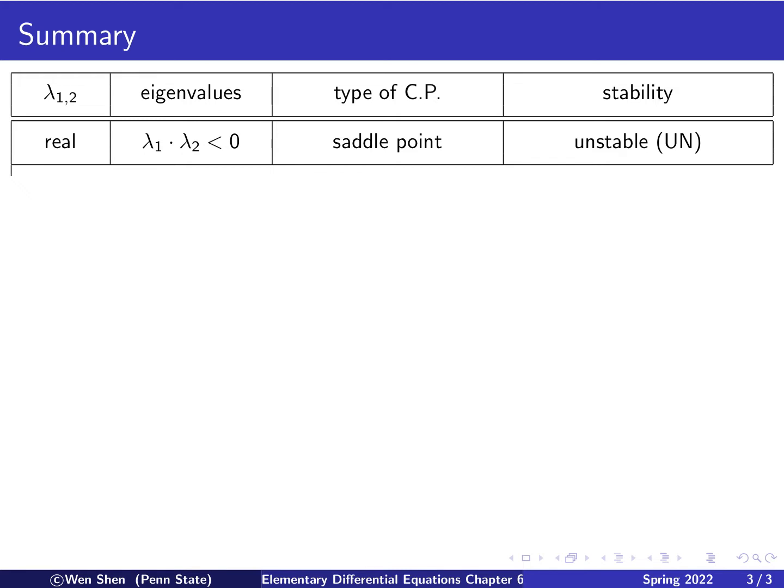The first case is where λ₁, λ₂ are real, and the product is negative. That means they're real, but they have opposite sign. This will give us a saddle point, and the saddle point is unstable. For unstable, I will write UN to denote it.